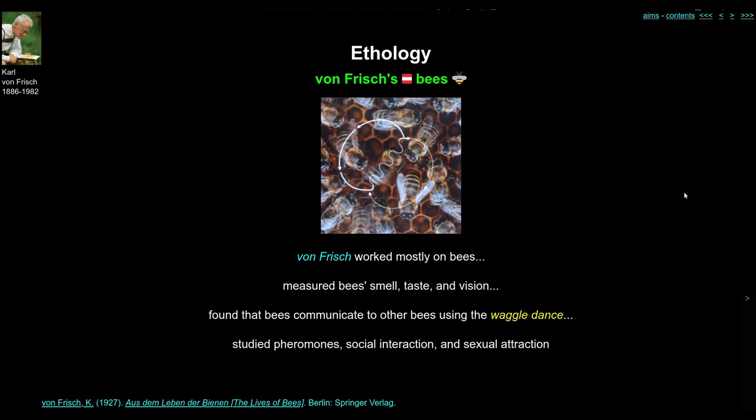Bees use a 'waggle dance' to communicate food sources: they walk in a circle, and on one side of the circle they do a zigzaggy left-right waggle that indicates the direction of food to the other bees. If you find some food, you come back to the hive, do a little dance, and the bees know where to go to find the same food. By studying these very carefully, von Frisch was able to work out that a lot of information was being communicated by one bee to the other bees in the hive.